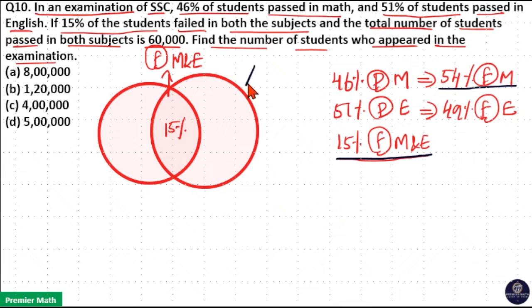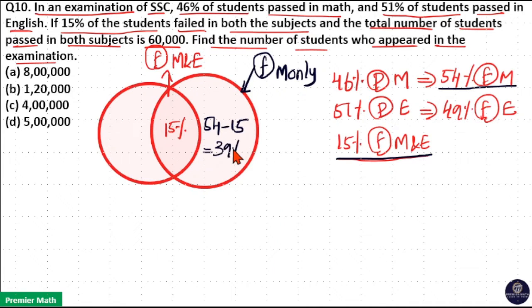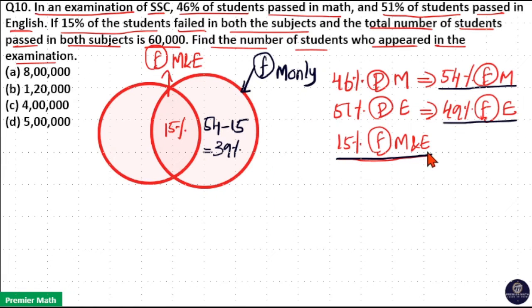In order to find the students who failed in maths only, we have to subtract 54 minus 15. So, 54 minus 15 equals 39%, which is the percentage of students who failed in maths only.